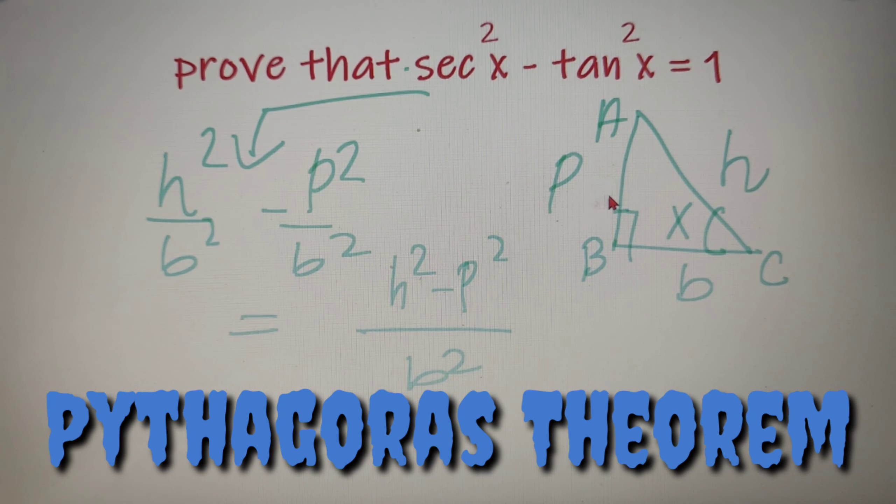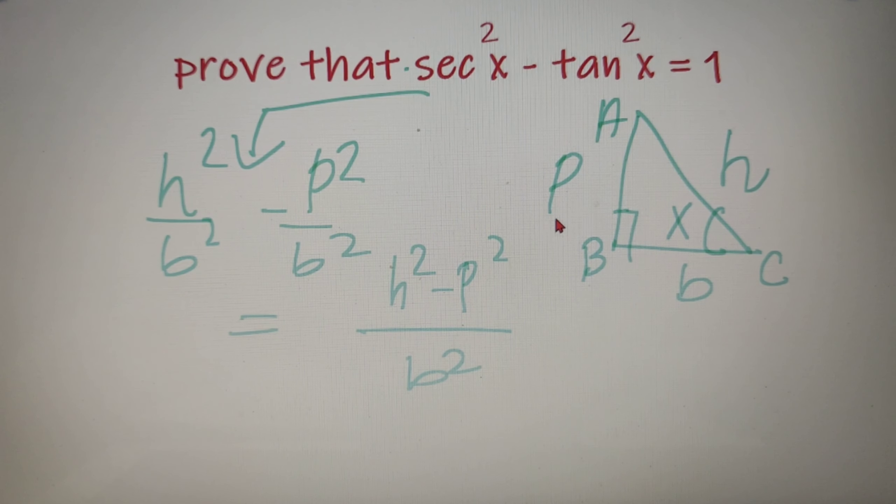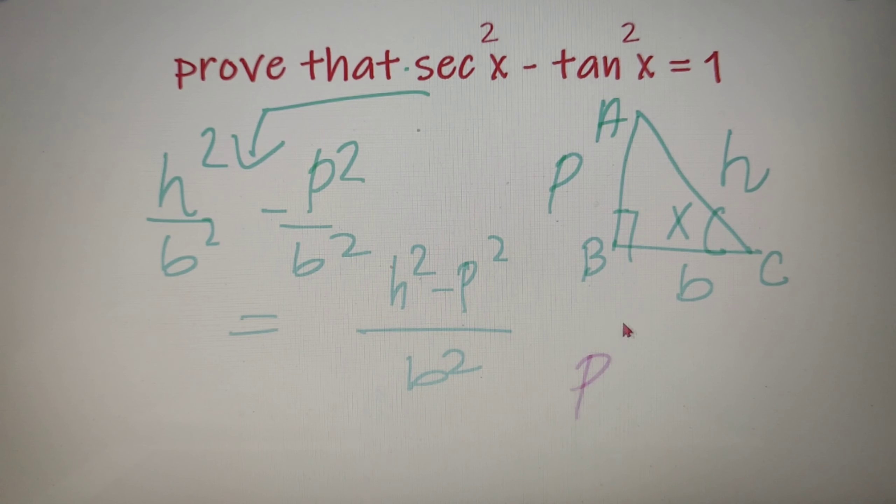Now we all know a very famous theorem related to a right-angled triangle which is the Pythagoras theorem which says that the sum of squares of perpendicular and base is equal to the square of the hypotenuse. So according to the Pythagoras theorem, p² plus b² is equal to h².